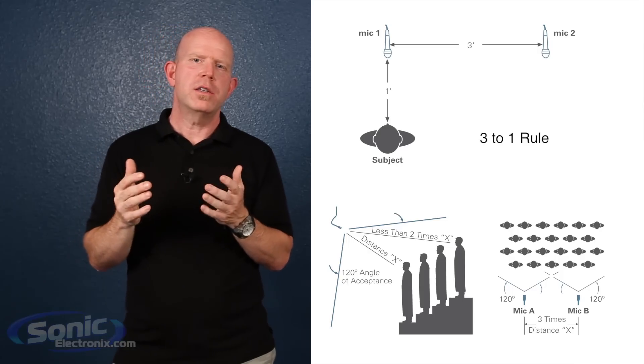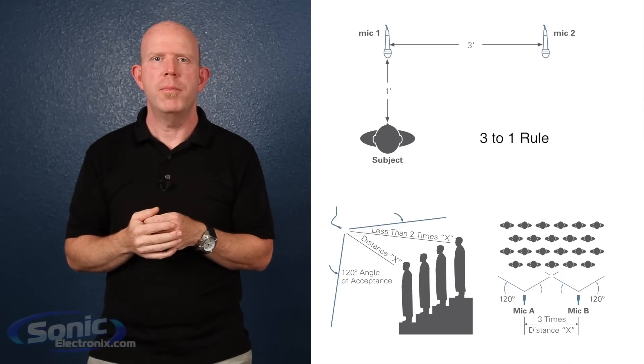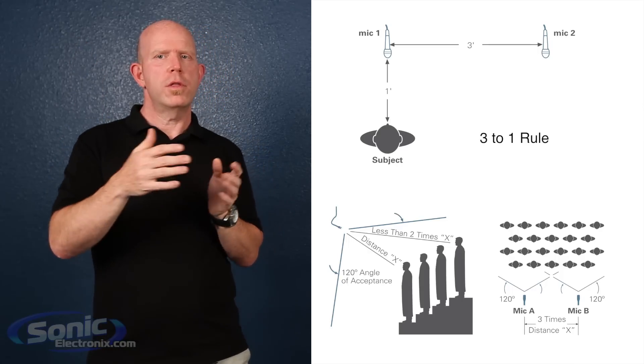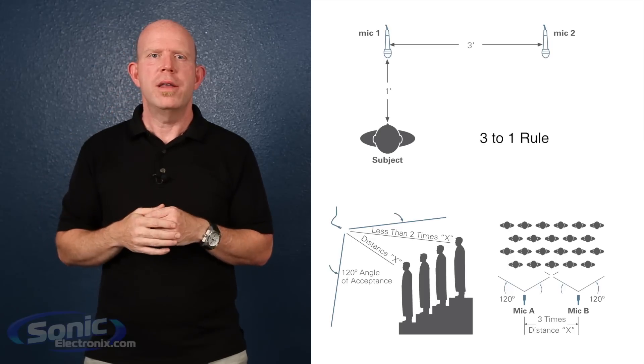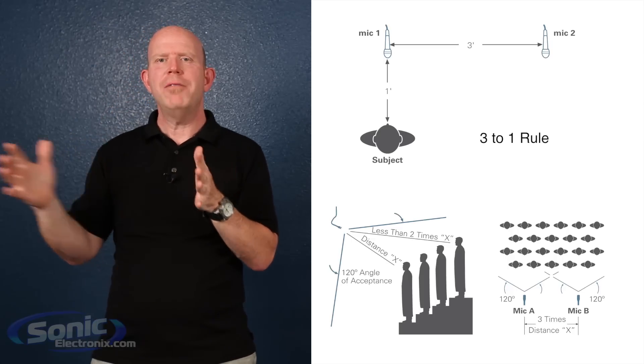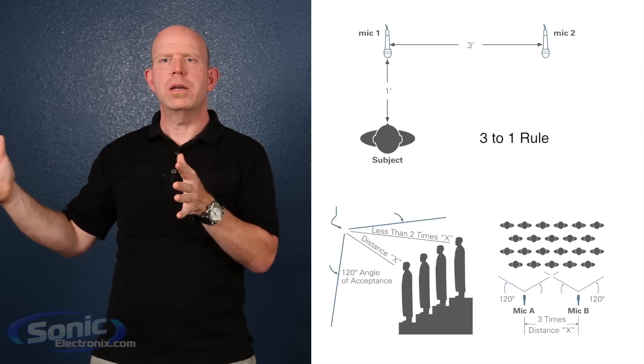In a choir setting where mics are being hung traditionally from above, you may be further, maybe 2 or 3 feet from the closest singer. The mic should then be either 6 or 9 feet apart to avoid these phasing problems, and avoid the urge to use more microphones. That can just cause all kinds of problems.